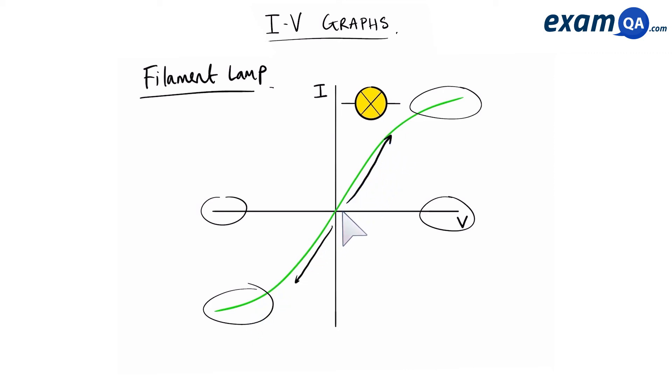So at these areas, it's quite steep in both directions. So over here, the gradient is quite high. Therefore, the resistance must be low. Same for this area. However, at the end of the graph, we can see that it's beginning to flatten off. So the gradient of the line is becoming smaller. Therefore, the resistance must be increasing.